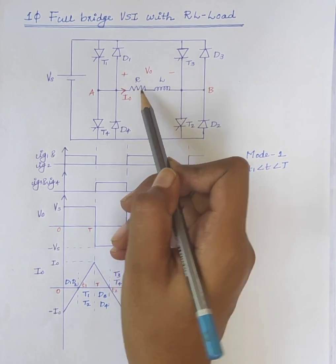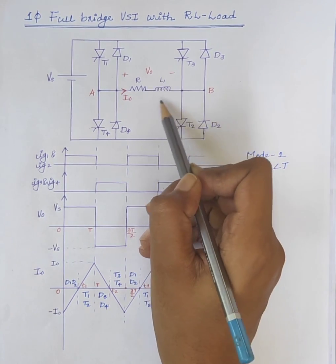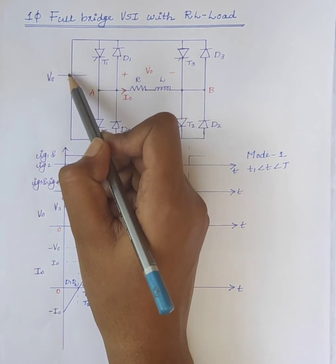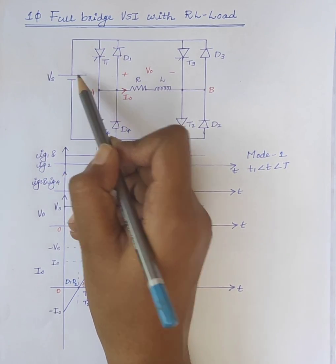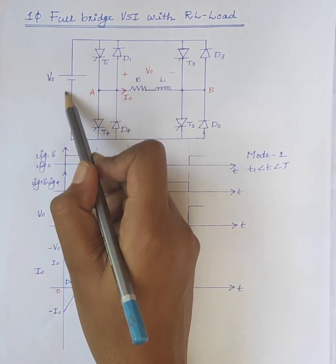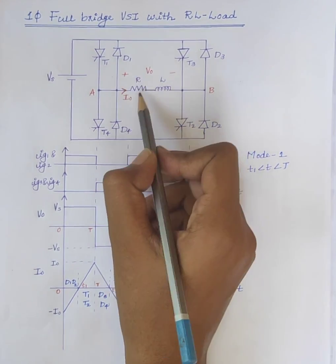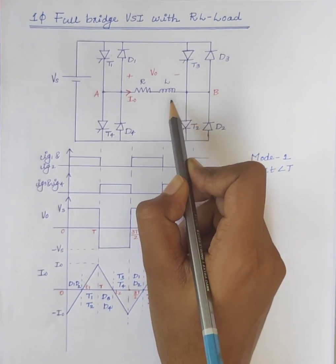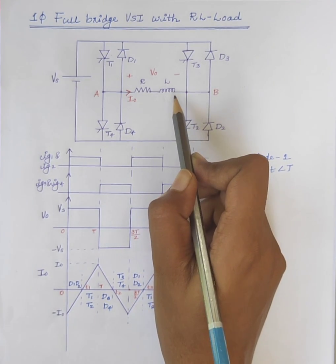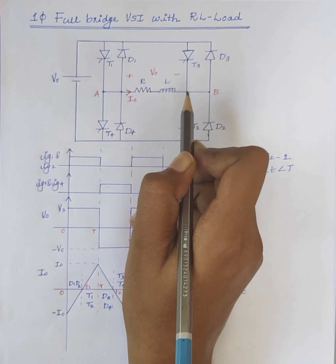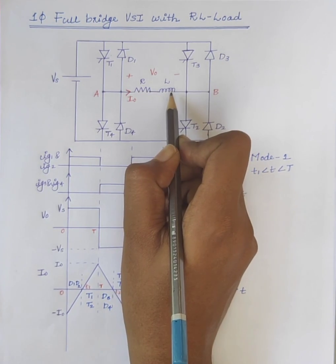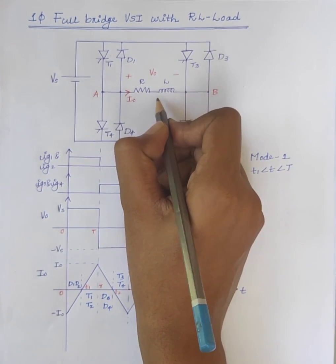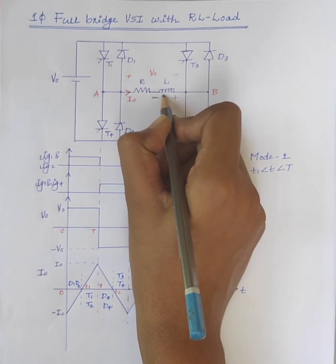The load current starts increasing exponentially due to the inductive nature of the load. Also, point A is connected to the positive terminal of the supply and point B is connected to the negative terminal of the supply. So the output voltage is positive Vs. During this interval, energy is stored in the inductive load. The inductor stores energy in the opposite direction of current flow, so here the direction of current flow is from A to B, and the inductor voltage is negative at A and positive at B.